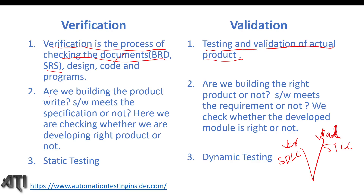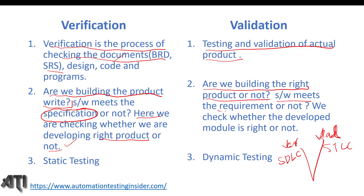The proper definition of verification is: are we building the product right? Here we talk more about the specification of the product — checking whether we are developing the right product. For validation, the definition is: are we building the right product? Here we talk more about requirements — checking whether the developed product meets the requirements. This is the difference in terms of definition.